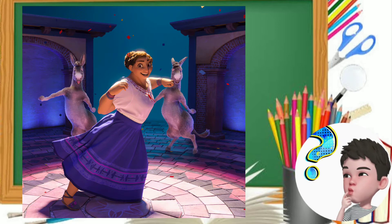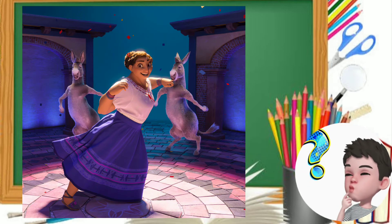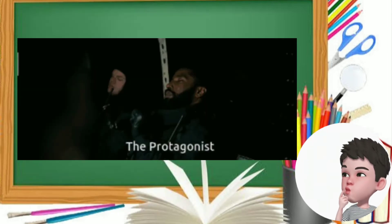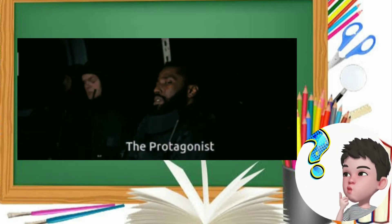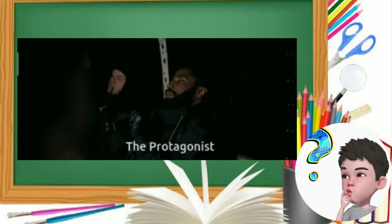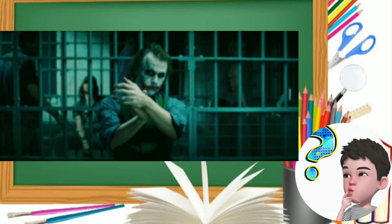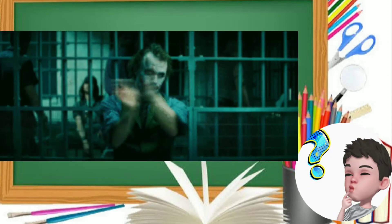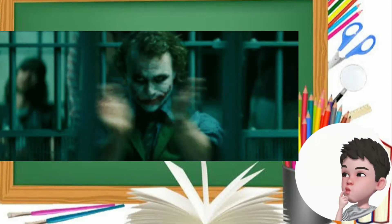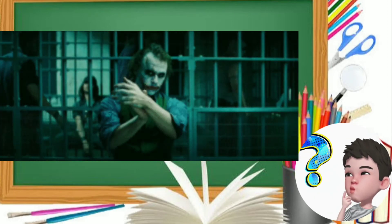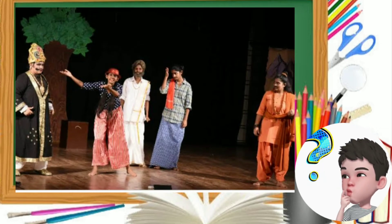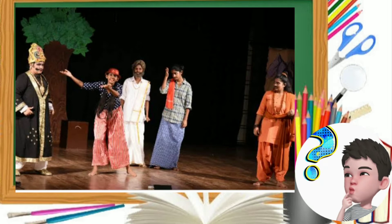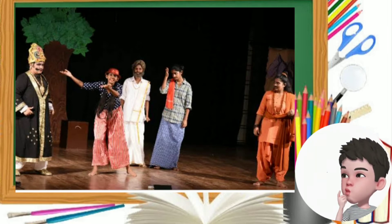Characters can be categorized into three types according to the roles they play. We have the main character, also known as the protagonist — the hero of the story. We also have the antagonist, the character who opposes the protagonist. The other characters that are neither the protagonist nor the antagonist are called secondary characters; they may have a major or minor involvement in the drama.